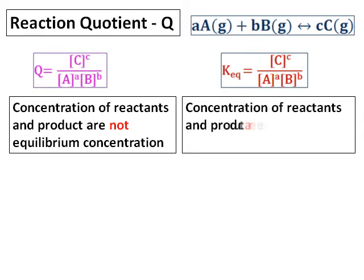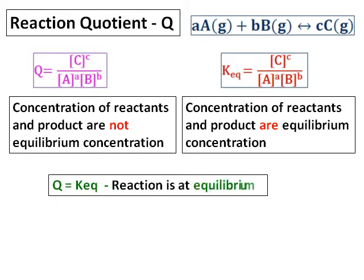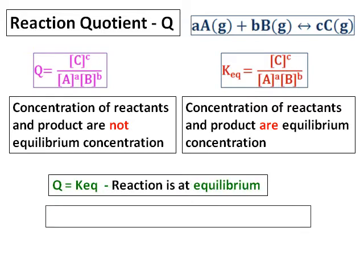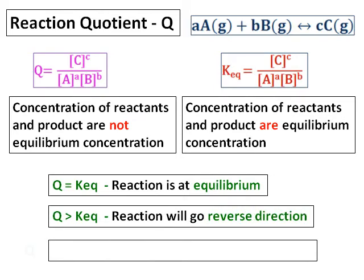Depending on the value of Q and K, we can predict which way the reaction will proceed. If Q equals K, the reaction is at equilibrium. If Q is greater than K equilibrium, the reaction will go in the reverse direction.